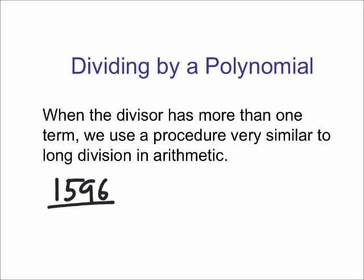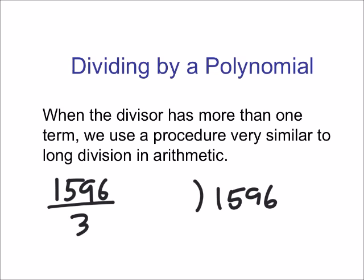1596 divided by 3, right? You'd have your dividend, 1596, your numerator, divided by your denominator. Hopefully this looks kind of familiar.